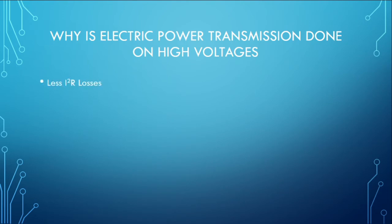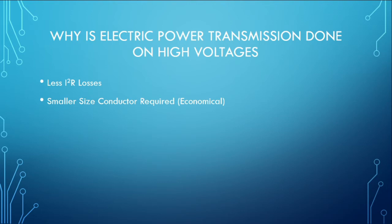First, less I²R losses. The losses on a transmission line are directly proportional to the current. So for the same power, if we increase the voltage, the current will decrease, resulting in less I²R losses. Second, a smaller size conductor is required. The size of the conductor is designed by the amount of current flowing through it, so for less current the conductor size will also be reduced, which is economical. Third, bulk power transmission — we can transmit bulk power with the help of high voltage transmission lines.